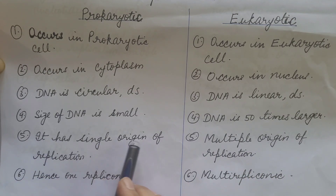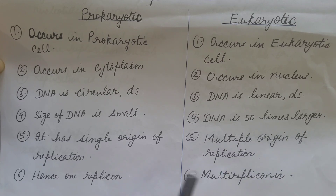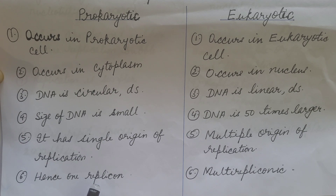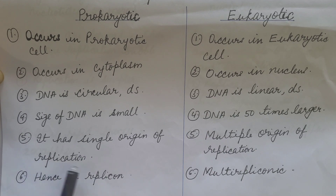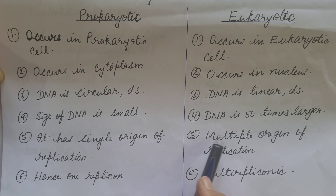In prokaryotes, DNA has a single origin of replication. In eukaryotes, it has multiple origins of replication. Hence, prokaryotic DNA has one replicon, as each origin defines a replicon — that is, the stretch of DNA replicated from a particular origin. Because there is a single origin, the entire DNA is replicated from it, so there is only one replicon. In eukaryotes, since there are multiple origins, it is multi-repliconic.